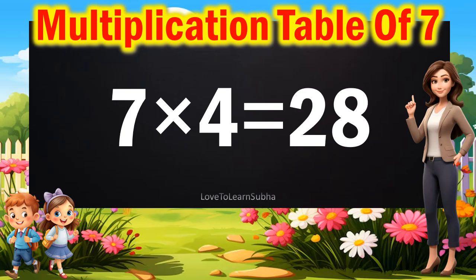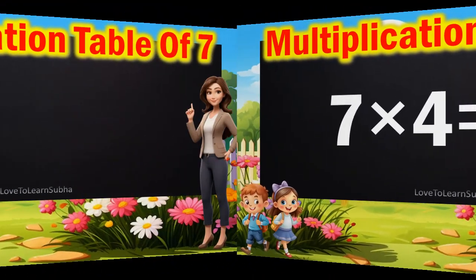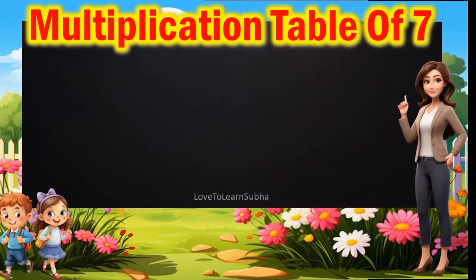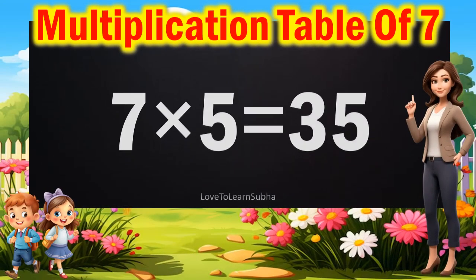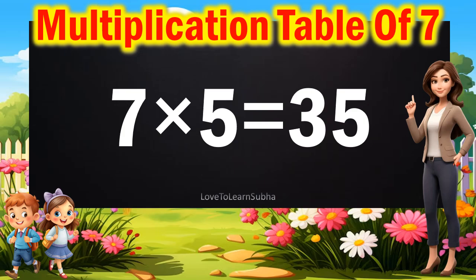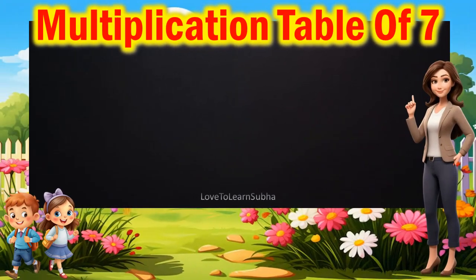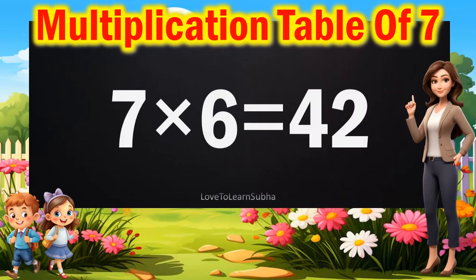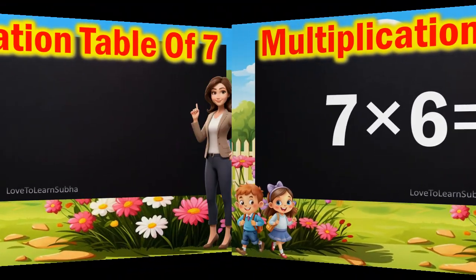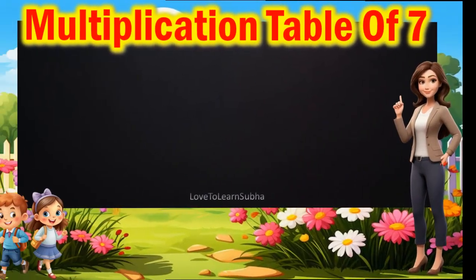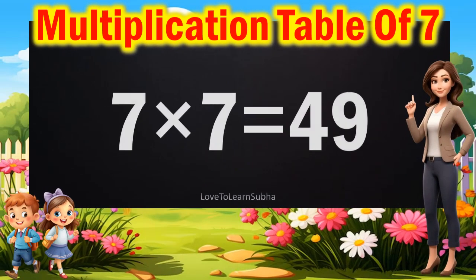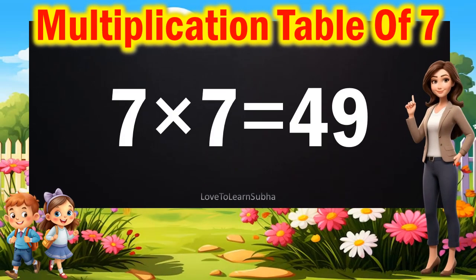7 fives are 35, 7 sixes are 42, 7 sevens are 49.